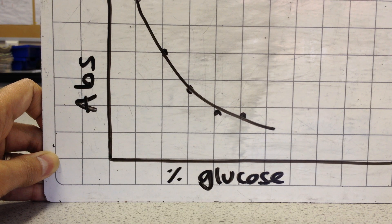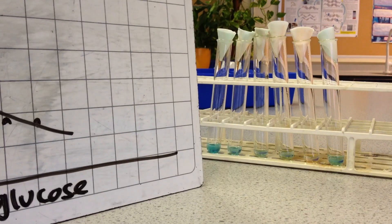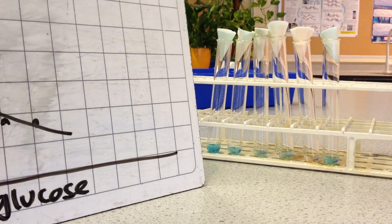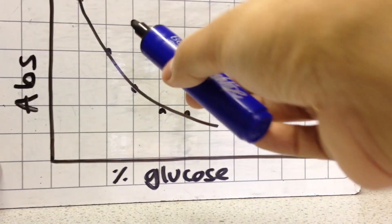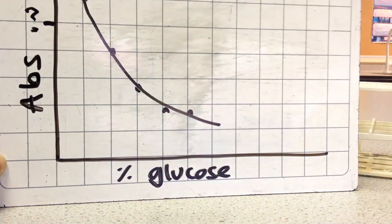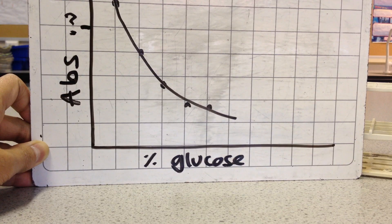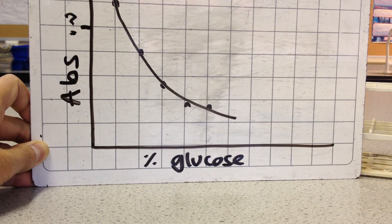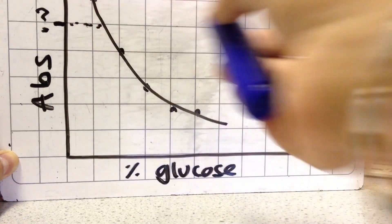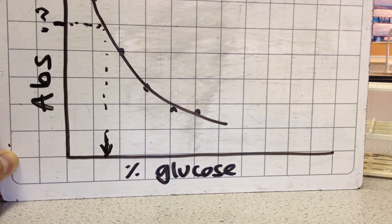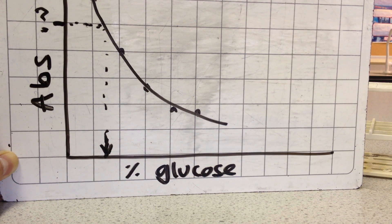All I'd have to do to measure the concentration in my unknown solution is to also run it through the colorimeter and measure the absorbance. I might get an absorbance at a particular value, then I'd just use the calibration curve with my known solutions to determine the amount in the unknown solution. I would do an interpolation — reading along the line, wherever it hits the calibration curve I read downwards, and that gives me the percentage of glucose in the unknown solution.